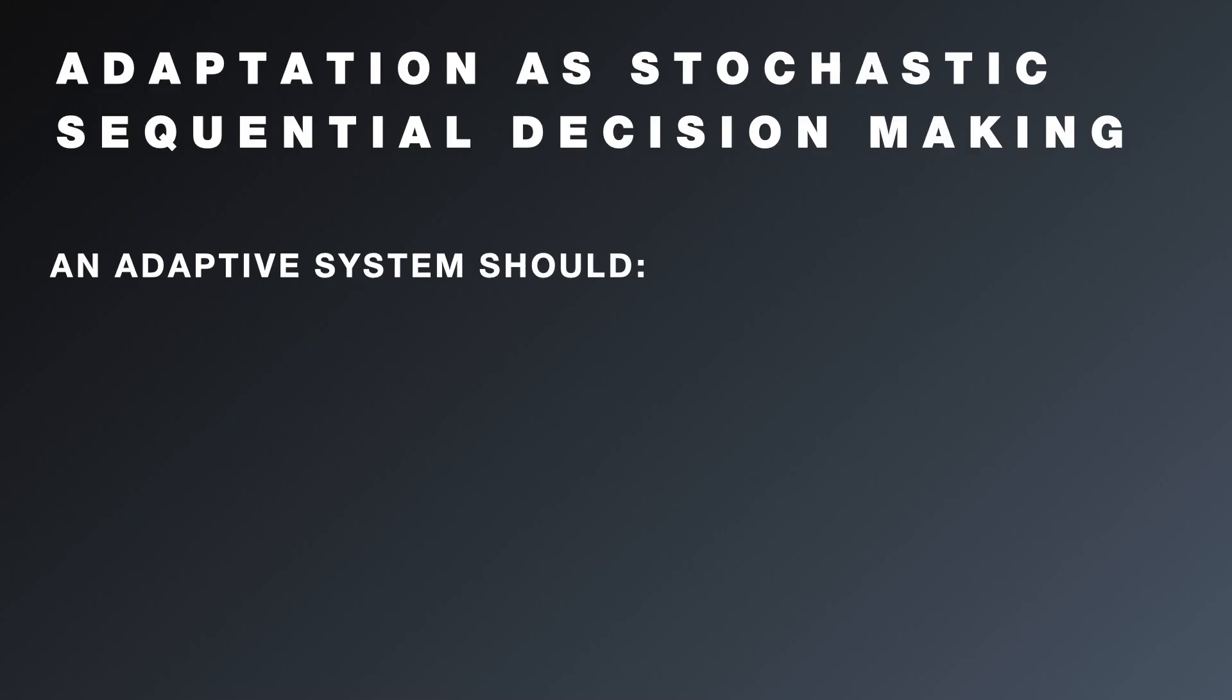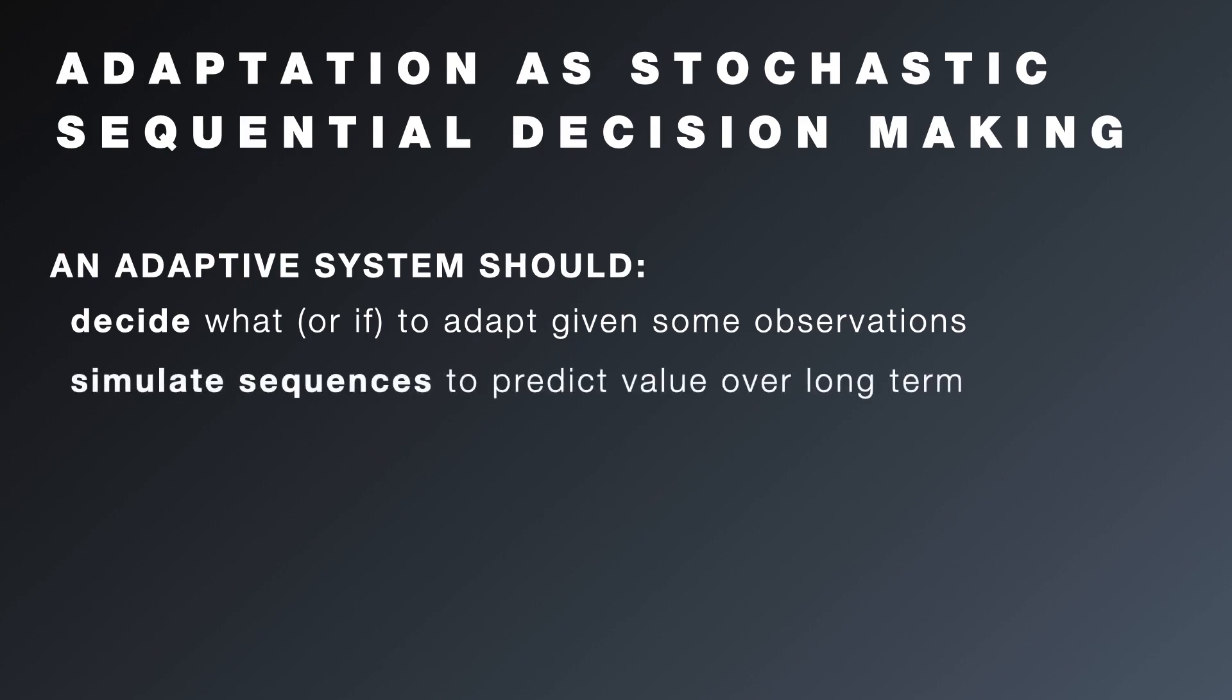We frame the problem of adaptation as a stochastic decision-making problem. Here, the system must decide what changes it should make, if any, by picking sequences of adaptations that can maximize utility.